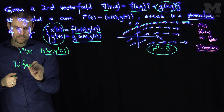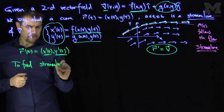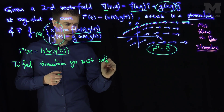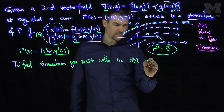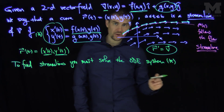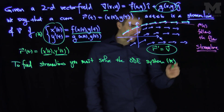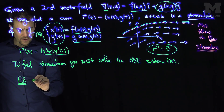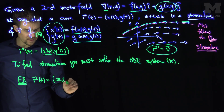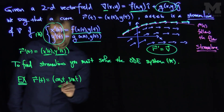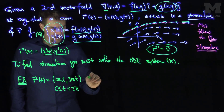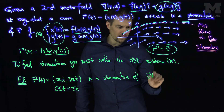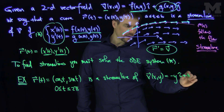Let me give an example when you can solve such a system. I claim that r(t) = (cos t, sin t), which parameterizes the unit circle for t between 0 and 2π, is a streamline of the vector field V(x, y) = -y î + x ĵ. Here x(t) = cos t, y(t) = sin t, the function f is -y, and the function g is x.